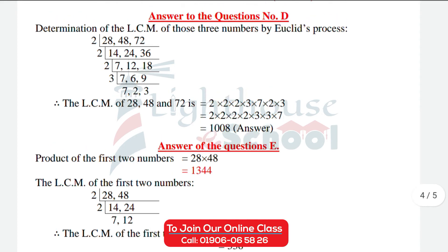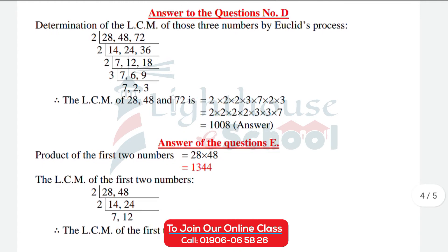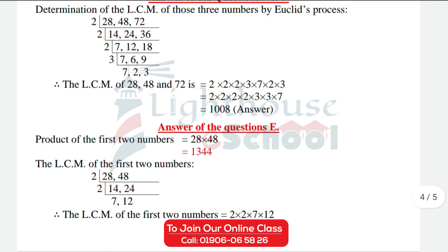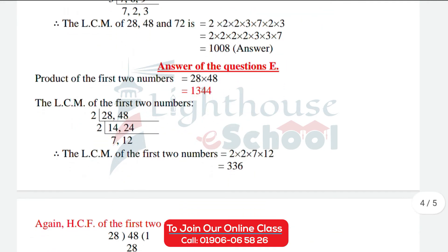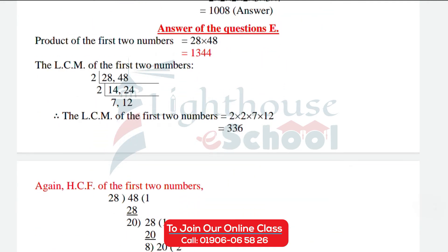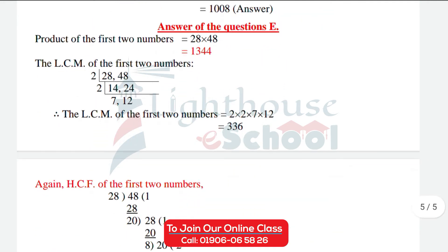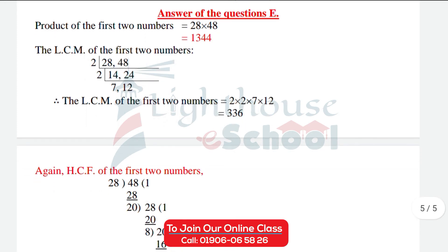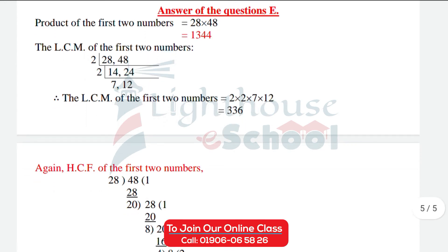All members are multiplied together. The LCM is 1008. Now we have to answer question number E. The product of the first two numbers — 28 and 48 — is 1344. The LCM of the first two numbers, 28 and 48, is also needed.